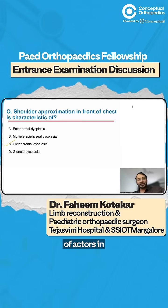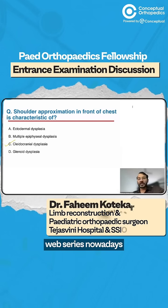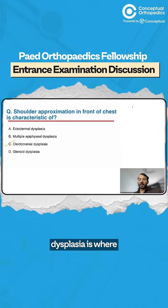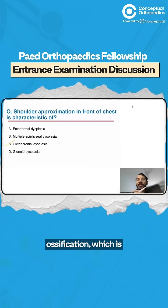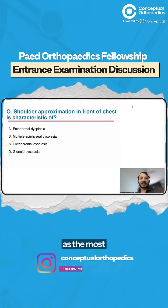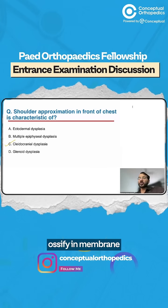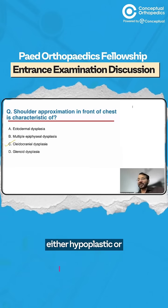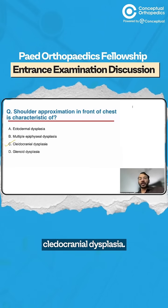You have actors in web series nowadays who come with these deformities or dysplasias. Cleidocranial dysplasia is where there is a problem with intramembranous ossification. Both the cranium as well as most flat bones — all the bones which ossify in membrane — are affected. The clavicle is either hypoplastic or absent. So the correct answer is cleidocranial dysplasia.